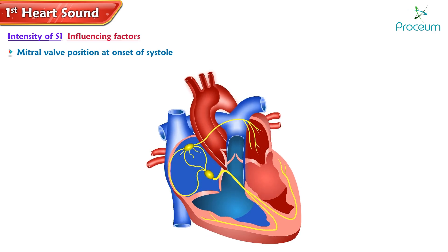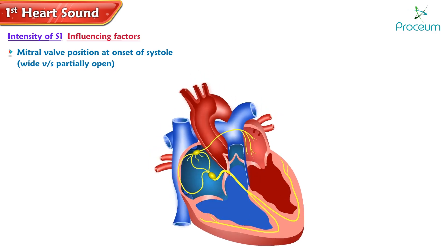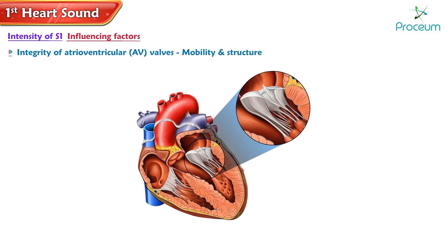The intensity of S1 can be influenced by several crucial factors. Mitral valve position — the degree to which the mitral valve is wide open or partially closed at the beginning of systole — can impact the loudness of S1. Additionally, the duration of the cardiac cycle plays a role in determining the intensity of S1.